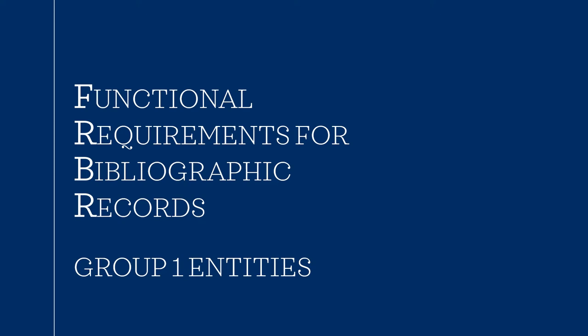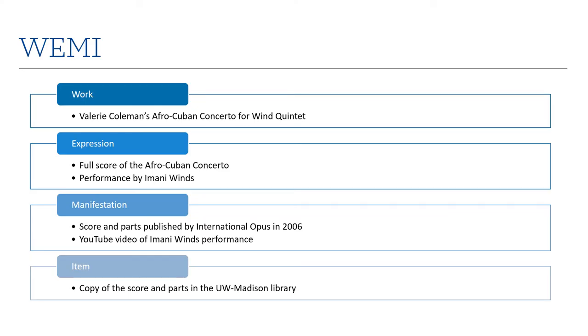The FRBR requirements include three sets of entities related to an item being cataloged or discussed. For now, I want to talk about the Group 1 entities. The Group 1 entities include the work, expression, manifestation, and item.